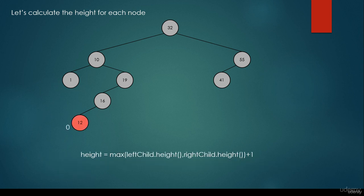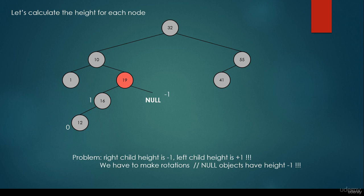This node 12 has the height parameter 0 because it is a leaf node. The 16 is going to have height parameter 1 because we calculate the height as the maximum of left child height and right child height, incremented by 1. The 16 doesn't have a right child and the 19 doesn't have a right child either — those are null with height parameter minus 1. So the left subtree of 19 has height 1 and the right subtree has height minus 1. The difference is 2, which is greater than 1, so we have to make some rotations.